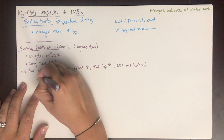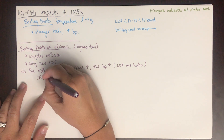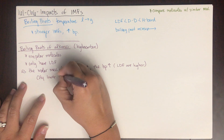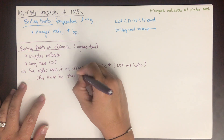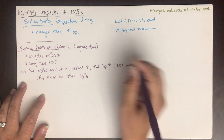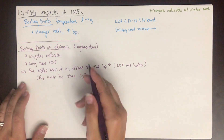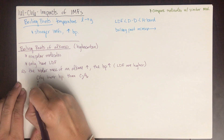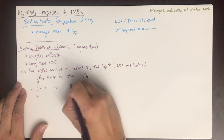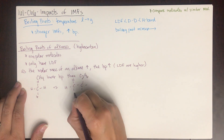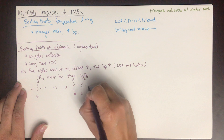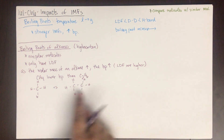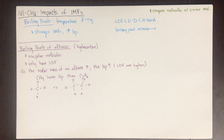For example, methane (CH4) has a lower molar mass than ethane (C2H6), so CH4 has a lower boiling point than C2H6. The bigger the molecule gets, the more London dispersion forces there are, and the higher the boiling point.